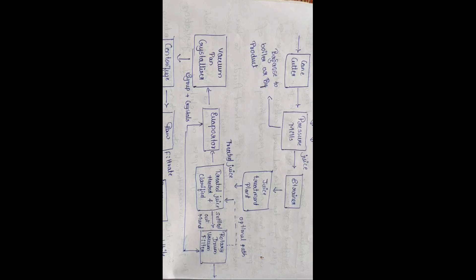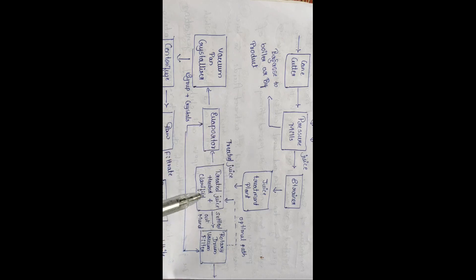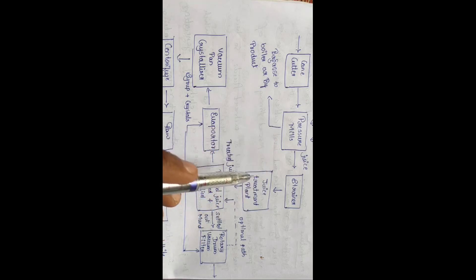Good afternoon students. Today we will discuss the sugar mill — how sugar will be manufactured using sugarcane. In the sugar industry, what are the processes that will happen? Today we will discuss that. This is the block diagram of the sugar mill, which consists of different blocks — different devices or different drives — which are going to make the sugar.